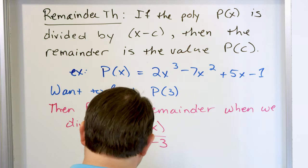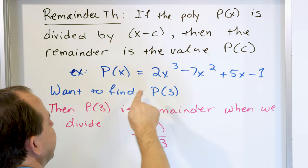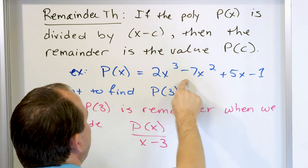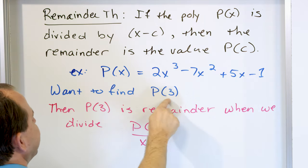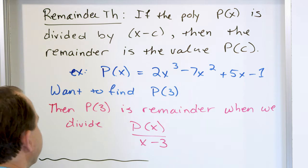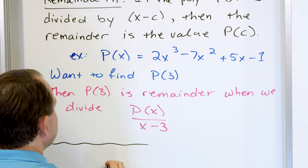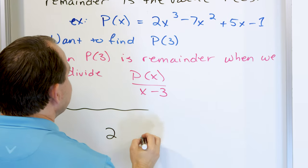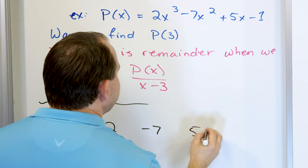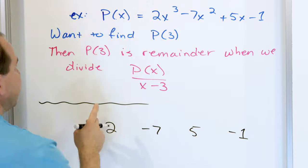So let's give a concrete example. I want to find p evaluated at 3 for this polynomial. I'm taking the coefficients 2, negative 7, 5, negative 1, and I'm going to do synthetic division. I have to divide it — of course I could do the long division.